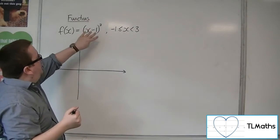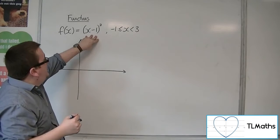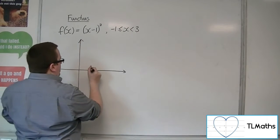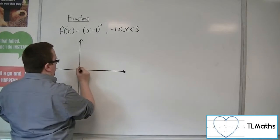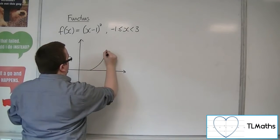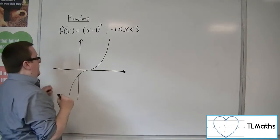So this will look like x cubed, but translated 1 to the right. So x cubed will ordinarily look like this. So it's been translated 1 to the right.